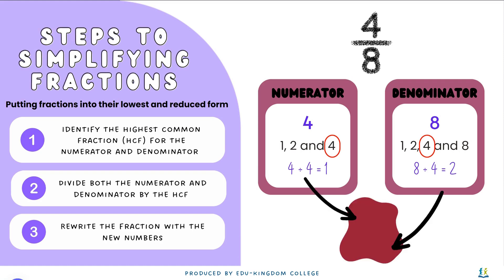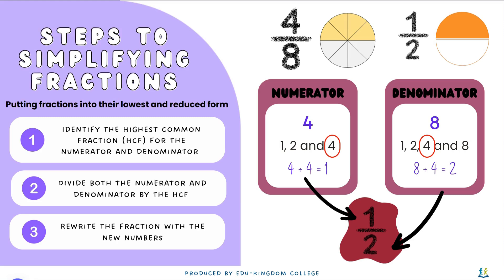For the last step, step 3, we have to rewrite the fraction with the new numbers. With 1 as the numerator and 2 as the denominator, the new fraction is going to be a half.